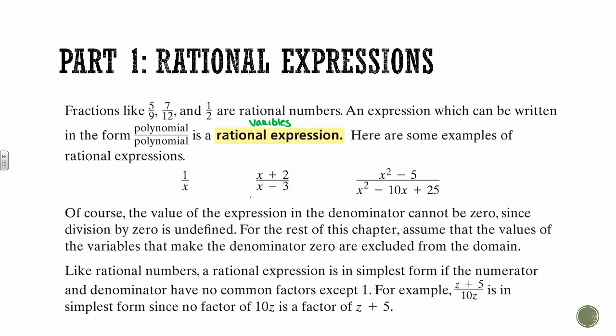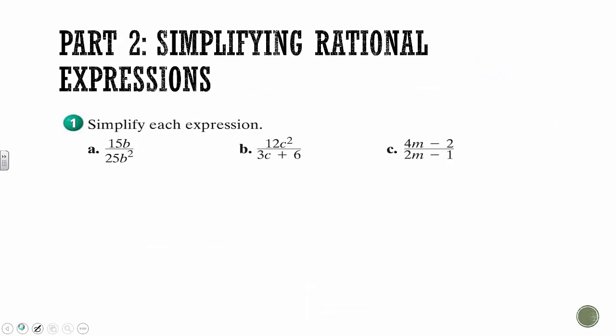Like rational numbers, a rational expression is in its simplest form if the numerator and denominator have no common factors except for 1. For example, this is in simplest form because 10z and z+5 don't have any common factors. It's kind of like when you go back to numbers. If you had 2/4, that would not be simplified because 4 is really 2 times 2, so they have that in common. So we would write it as 1/2, and then consider that fully simplified. So that's what we're going to do today, is simplify things.